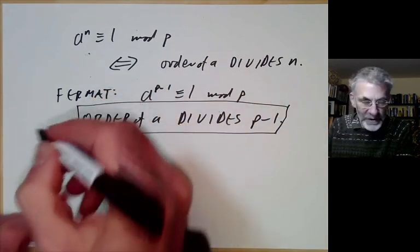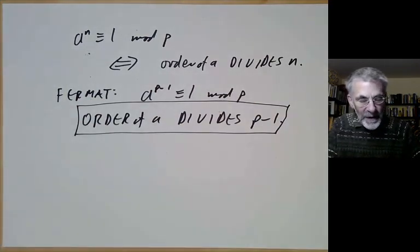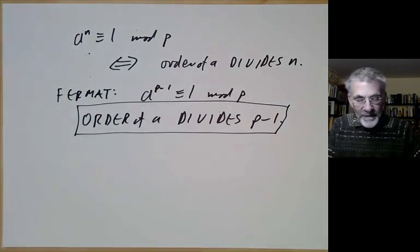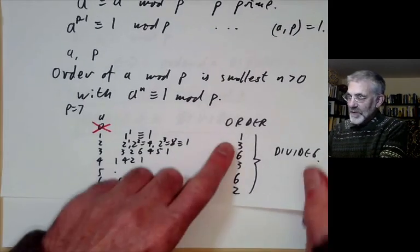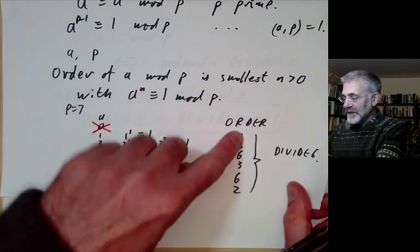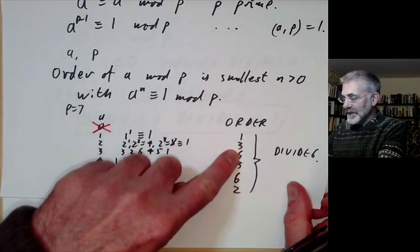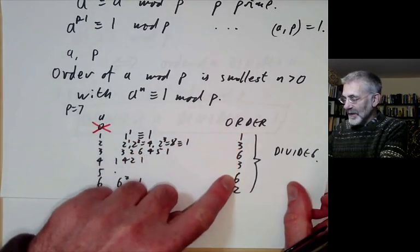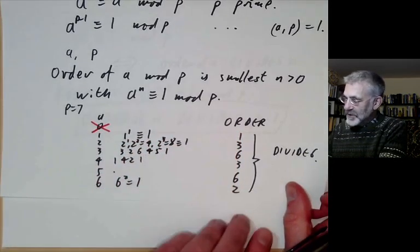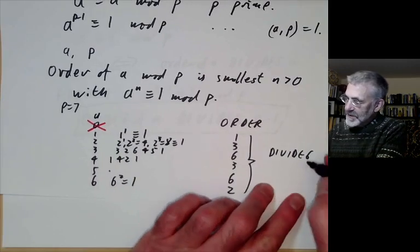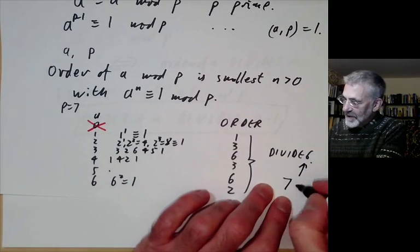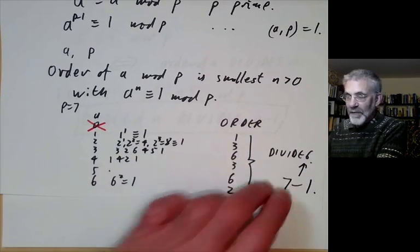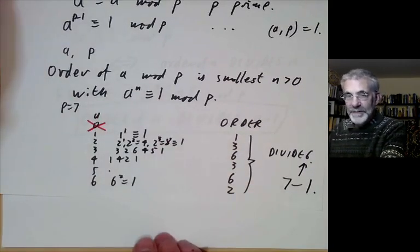This is very useful. Going back to the example for p=7, we saw the order of any element is always 1, 3, 6, 3, 6, or 2, and we notice these always divide 6, which is 7 minus 1.